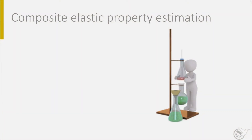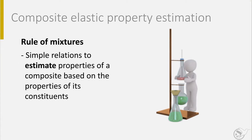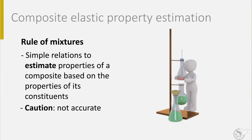Some properties of fiber reinforced polymers can be estimated by a simple rule of mixtures. This approach is applicable for the density of the composite and for the strength and stiffness of the composite. For other properties, like failure strain or compressive properties, you should not use this estimation. Realize it is an estimation, so it gives a first approximation of values.